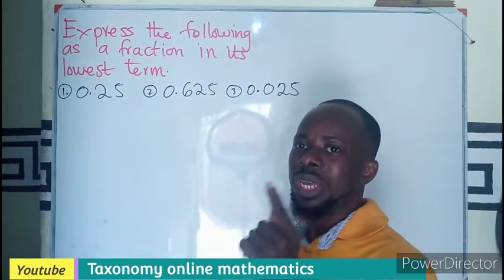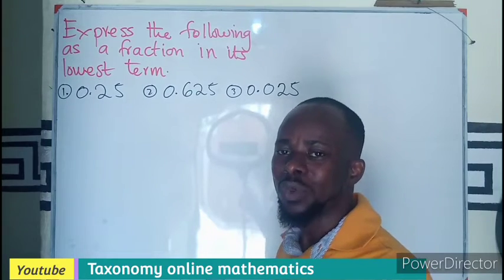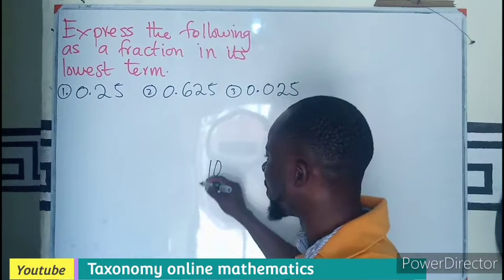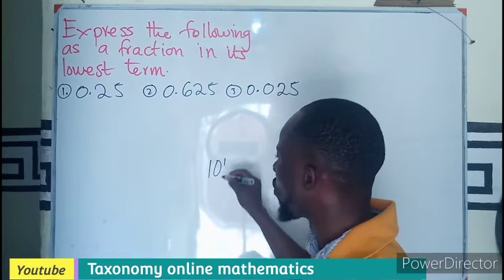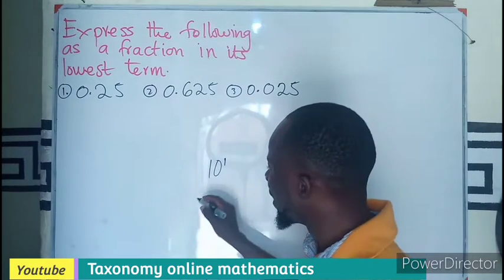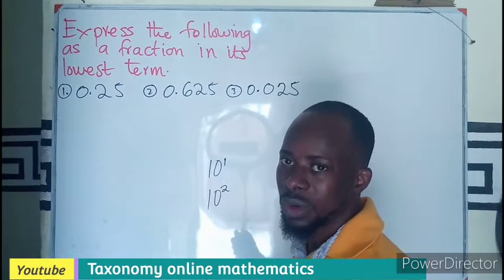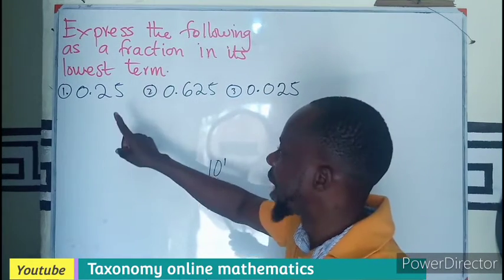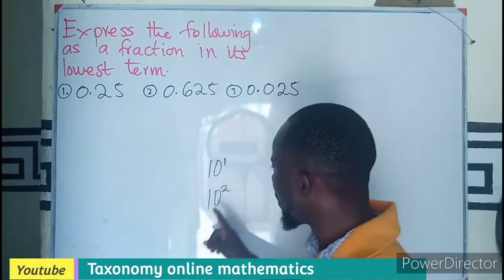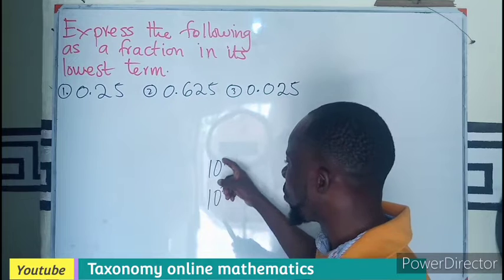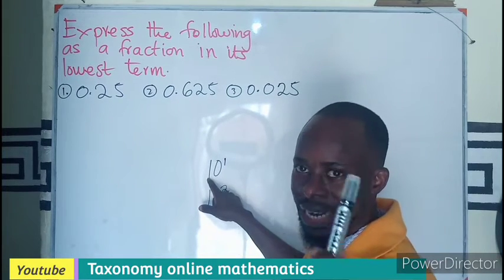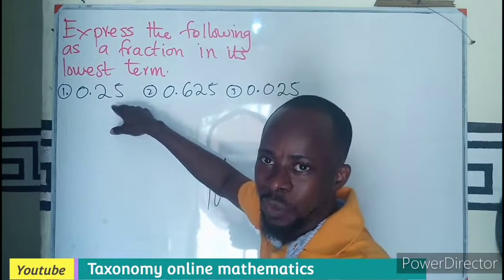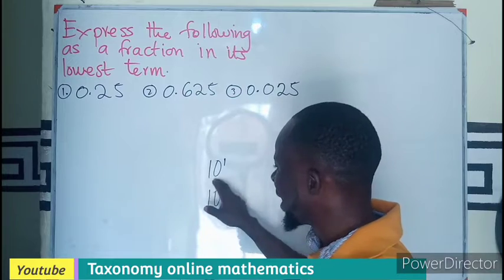Each decimal place is taken as a power of 10. So if I have one decimal place, it's going to be 10 to the exponent one. If there are two decimal places, it becomes 10 to the exponent two. First step: identify the number of decimal places. Second step: each decimal place is going to be an exponent of 10. Third step: divide the number without the decimal point by that power of 10.